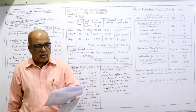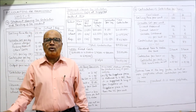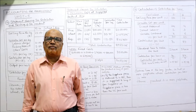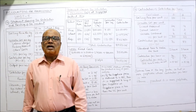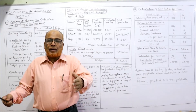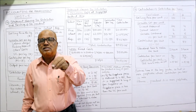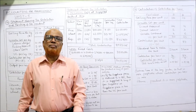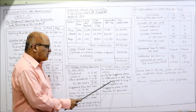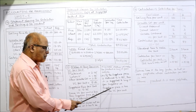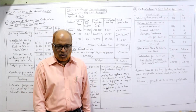Second question: what should be the decision if the supplier offers the component at ₹4.85 each? The variable cost of making is ₹5.00, whereas the supplier price is now ₹4.85 — the supplier price is less. So it is better to buy from the supplier. If the supplier price is reduced to ₹4.85, it is suggested to buy from the supplier as supplier price is less than the variable cost.